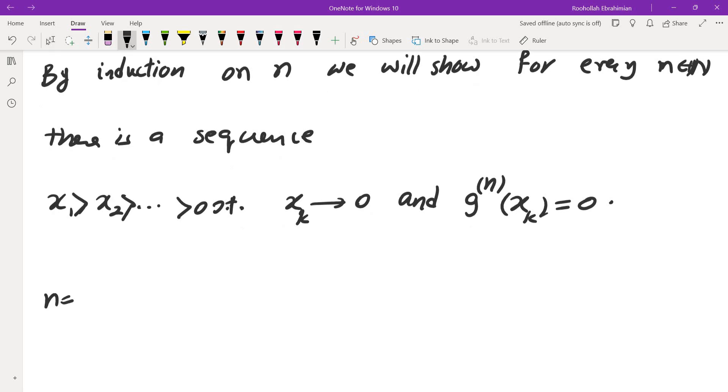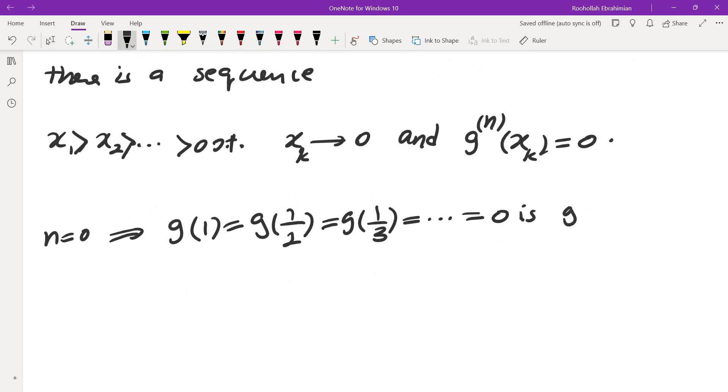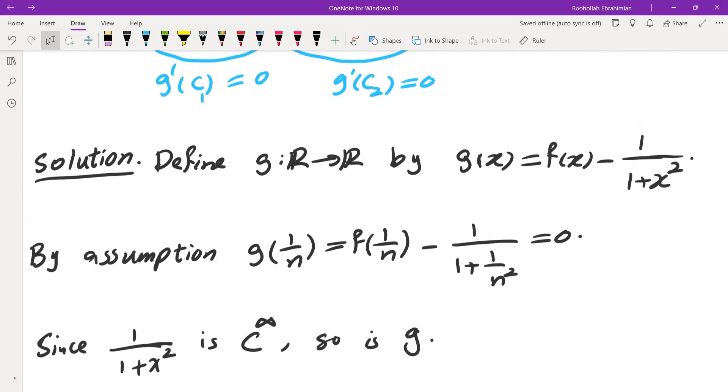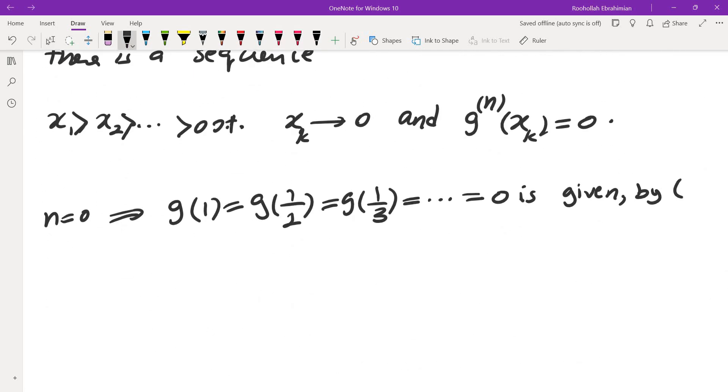So the first step would be for n equals 0, we have g of 1 equals g of 1 over 2 equals g of 1 over 3, etc. And that's all equal to 0. That's given. This is given. And we actually found that here. So this is, I guess, I'm going to call that star by star.